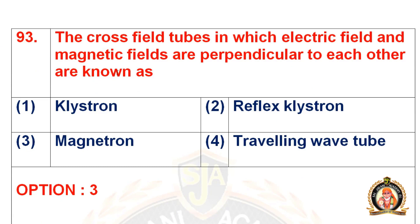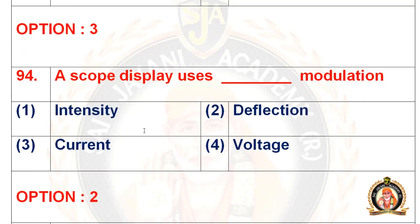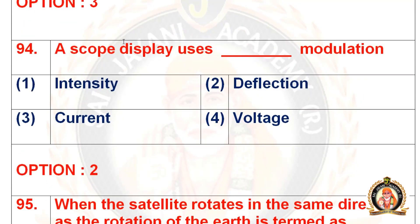Move on to the 93rd question: cross field tubes in which the electric field and the magnetic fields are perpendicular to each other are known as dash. Options: klystron, reflex klystron, magnetron, or traveling wave tube. The answer for the 93rd question is the third option — magnetron.